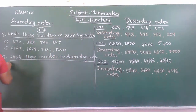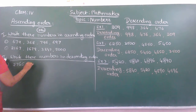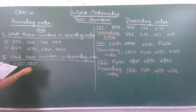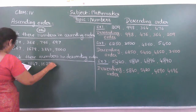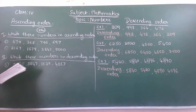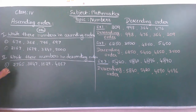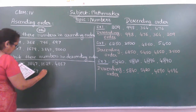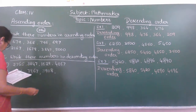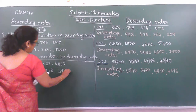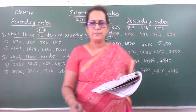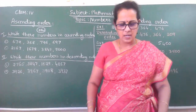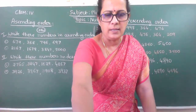First one: 2,765; 3,847; 1,629; 4,867. Next, second one: 3,926; 3,967; 3,928; then 3,937. So these two you write in your homework book, children. See you in the next class. Bye.